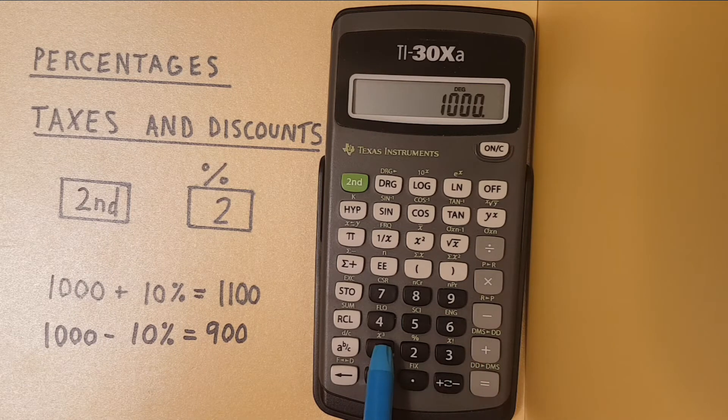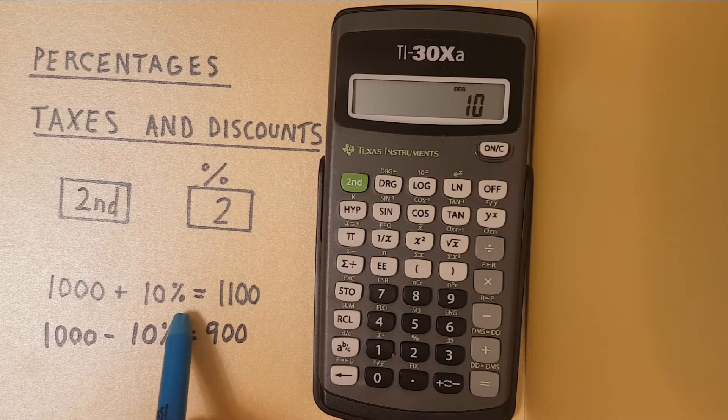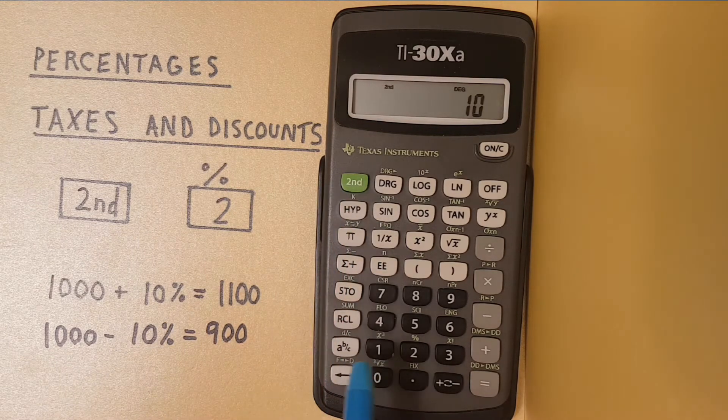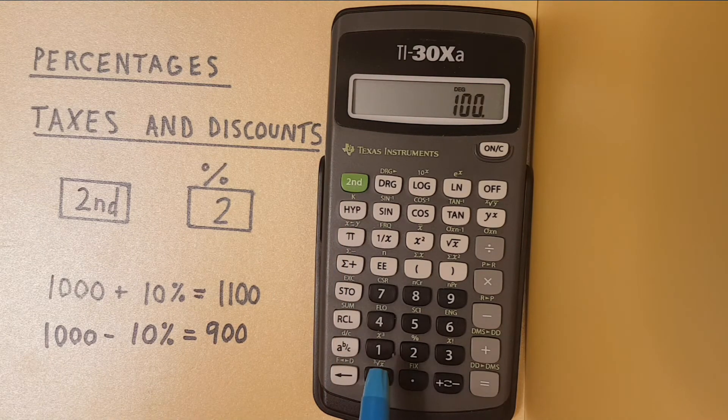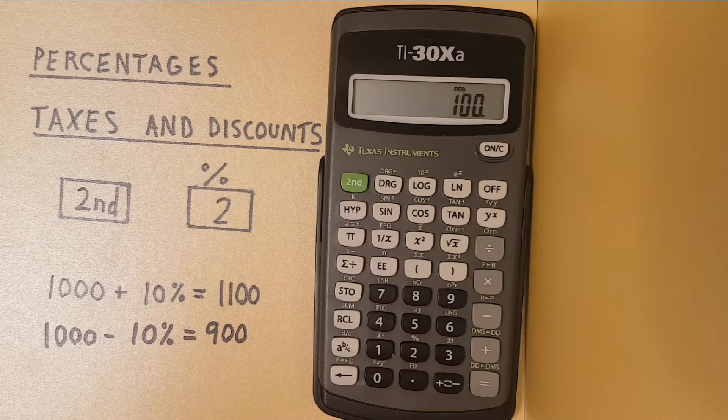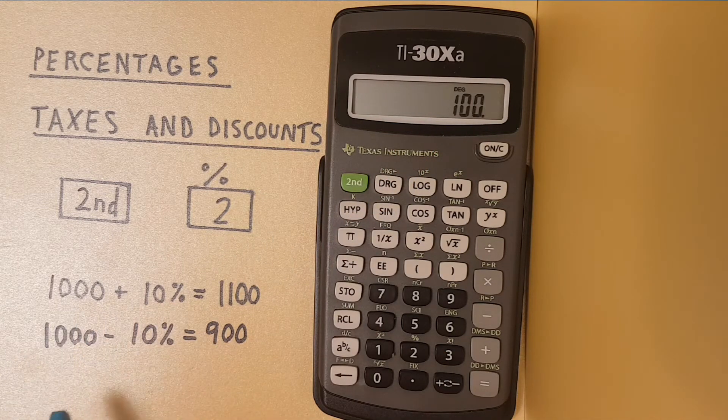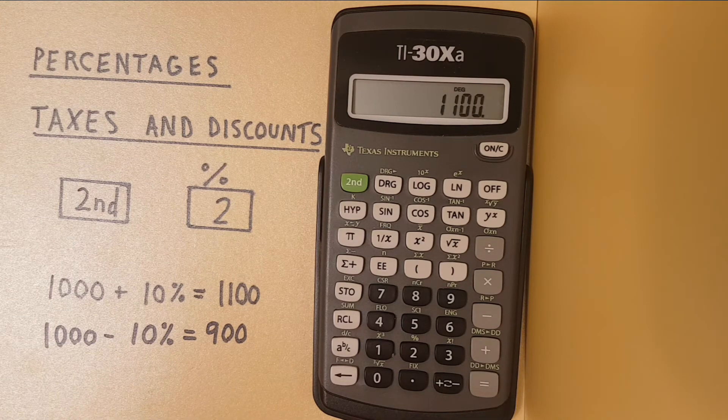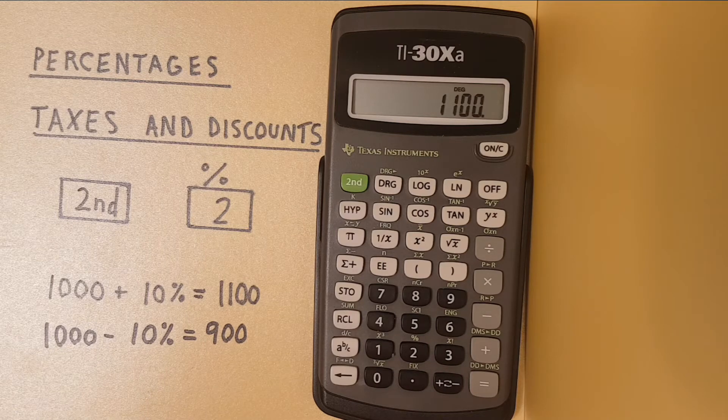Plus 10 and then the percentage, so second function 2%. You see that 10% changes to 100 which we should know is 10% of 1,000, and then press equals and we get 1,100 which is 1,000 plus 10%.